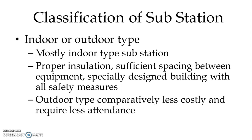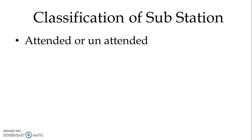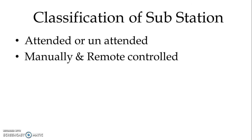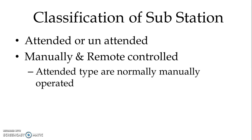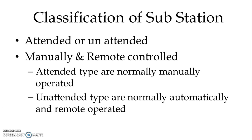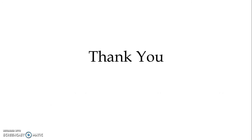Outdoor type substations require less attendance. Attended type substations are normally manually operated — for 24 hours, in-charge supervisors and operators are required. While unattended type substations are normally automatically and remote operated. These are some of the classifications of substation used during track electrification. Thank you for watching.